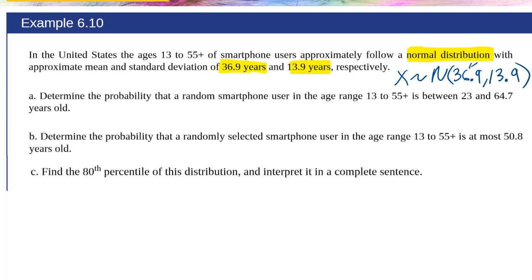This first parameter here is mu or mean. The second parameter is sigma or standard deviation. Determine the probability that a random smartphone user in the age range 13 to 55 is between 23 and 64.7. So between 23 and 64.7 years old.